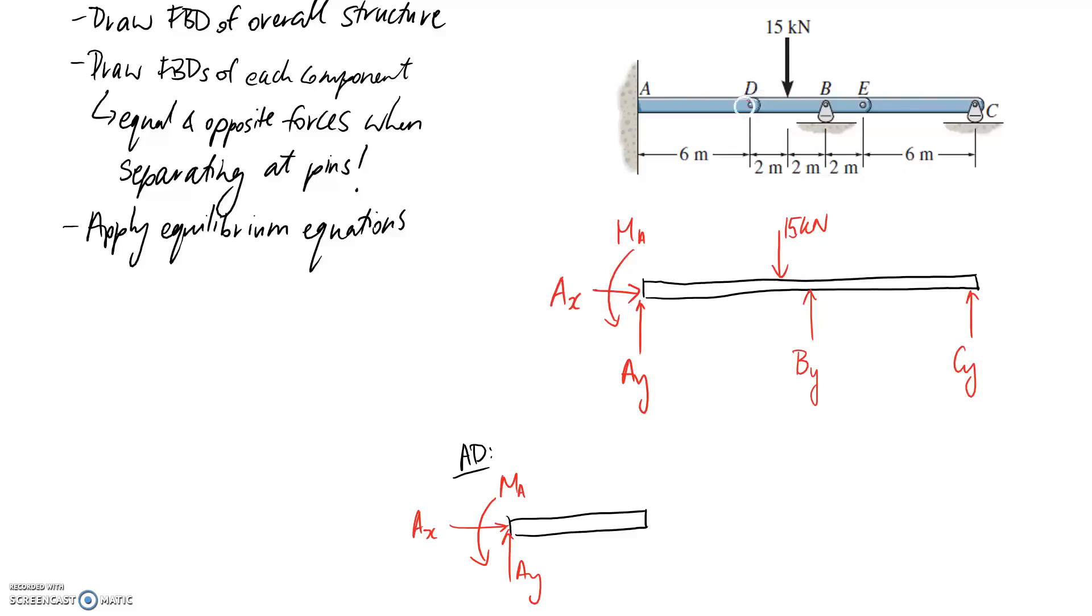And this time we're separating at the pin as well. So this is the point D here, and we need to take a guess on what directions things are going to be. So it's a pin that's going to have a horizontal and a vertical component. So I'm going to guess the vertical component goes upwards, call it DY. And I'll guess the horizontal part goes to the left, DX.